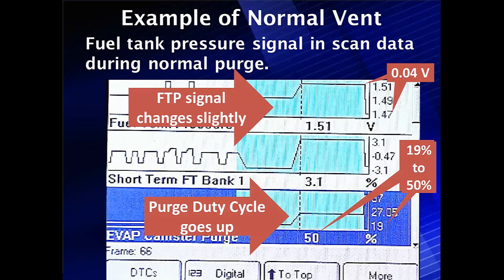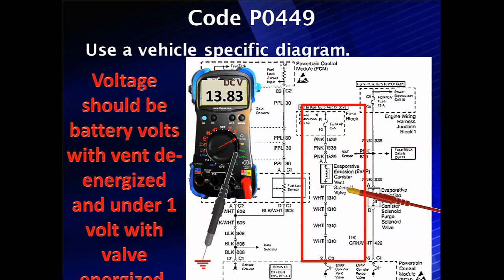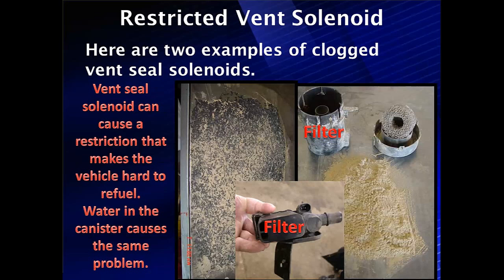The other half of this problem: if it does change, why? The voltage should be battery voltage with the vent de-energized and be under one volt energized. One of our problems is that sometimes it does not drop to below one volt. So we need to check this to make sure that we have good contact. Check for an open circuit if it doesn't go down — it's a malfunctioning vent solenoid, but for a reason we should find with other codes.